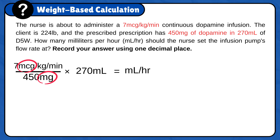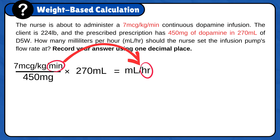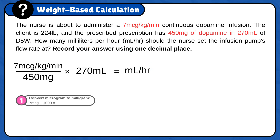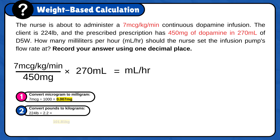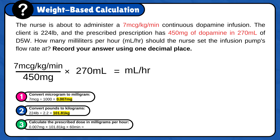Convert micrograms to milligrams to match the unit on the bottle so they can cancel out. The patient's weight in pounds needs to be converted to kilograms to calculate the prescribed dose. And minutes need to be converted to hours because the question is asking in hours. First, convert micrograms to milligrams: 7 micrograms divided by 1000 is 0.007 milligrams. Now convert pounds to kilograms: 224 pounds divided by 2.2 is 101.81 kilograms. Now calculate the prescribed dose in milligrams per hour: 0.007 milligrams times 101.81 kilograms times 60 minutes is 42.76 milligrams per hour.